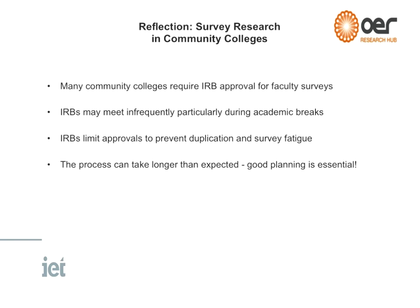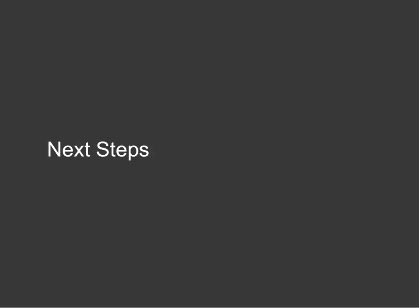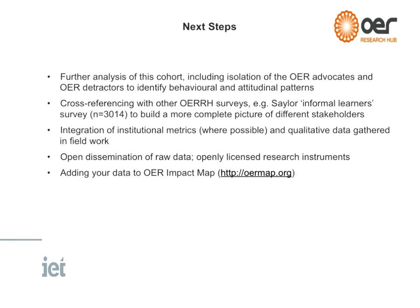One thing briefly to mention coming out of this work is about the importance of a timely IRB process. If you want to do any research like this or use our survey questions, get on top of your IRB process as soon as you can. We have some more work to do on this survey data, and we also need to cross-reference it with our other surveys — for instance, we have a Sailor survey with about 3,000 responses, all informal learners, some of whom are also college students using Sailor materials for their college courses. IRB stands for Institutional Review Board — basically where you get your ethical approval, sometimes called a student research panel. We also need to pull together the qualitative data, and we're interested in institutional metrics where we can find them.